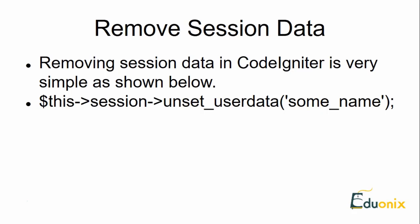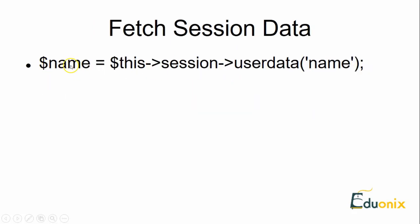Removing session data in CodeIgniter is done with `$this->session->unset_userdata('some_name')`, where `some_name` is the key. You can also remove an entire array by passing the array name to `unset_userdata()`. To fetch session data, use `$this->session->userdata('name')` — this function returns null if the data is not available in the session. We'll now create a controller and view to see this in action.